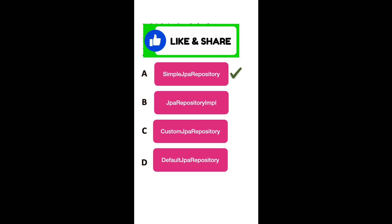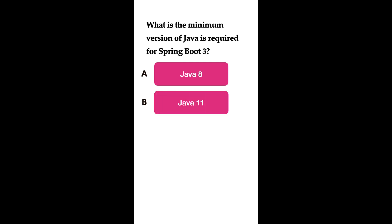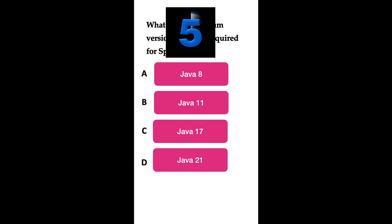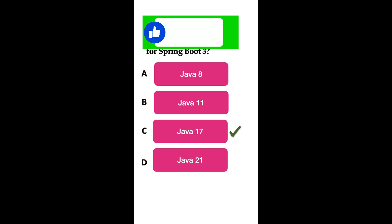What is the minimum version of Java required for Spring Boot 3? Option A: Java 8. Option B: Java 11. Option C: Java 17. Option D: Java 21. The correct answer is Java 17. Spring Boot 3 requires a minimum of Java 17. You can use Java 18 or higher, but if you are using Spring Boot 3 to develop RESTful web services or microservices, you must use at minimum Java version 17.